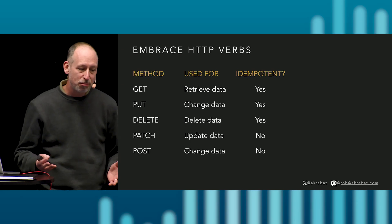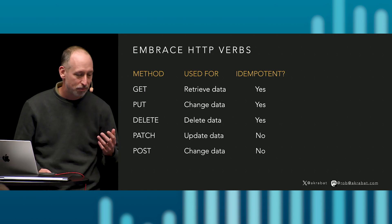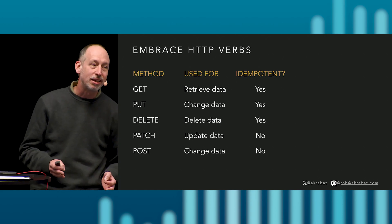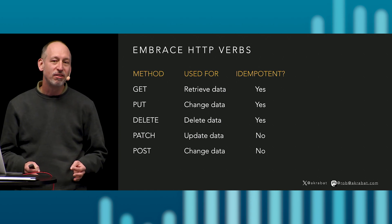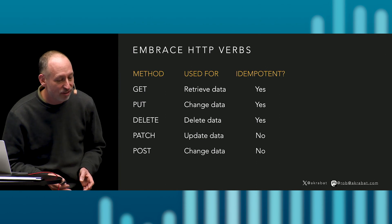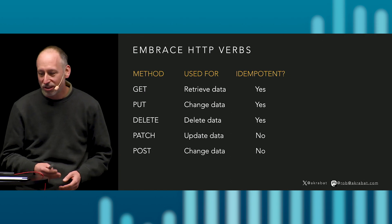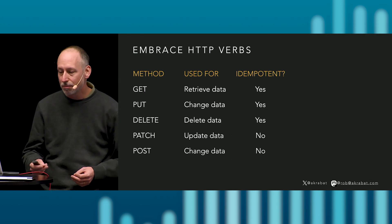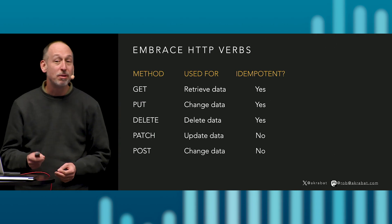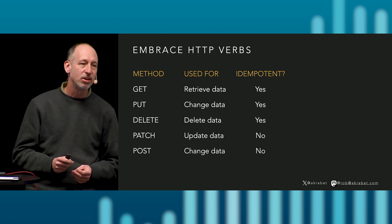Embrace HTTP verbs. If we're doing a RESTful API, we have the verbs that represent what's going on: GET, PUT, DELETE, PATCH, and POST. They are used for different things in an HTTP API — use them correctly. Do not make me use a GET request to delete a resource. That is bad. There are so many levels, but I have seen APIs that do it. Consider whether you need idempotency — which simply means that we can repeat the action multiple times and get the same result. That can be really handy for APIs working in unreliable service areas like mobile networks.